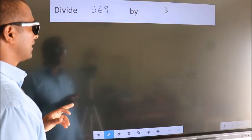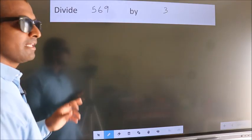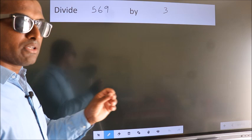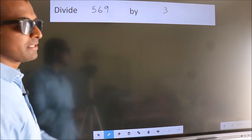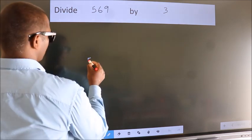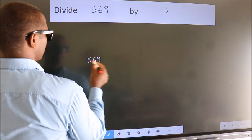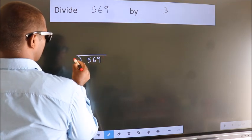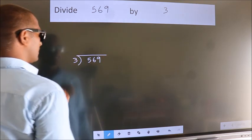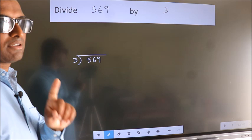Divide 569 by 3. To do this division, we should frame it in this way. 569 here, 3 here. This is your step 1.